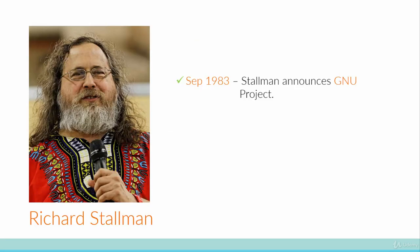On the 27th of September 1983, a person called Richard Stallman announced that he was going to begin developing an operating system similar to Unix but made of entirely free software. The operating system was called the GNU operating system, spelled G-N-U, which stands for 'GNU is not Unix' — what they like to call a recursive acronym.